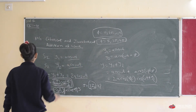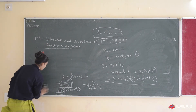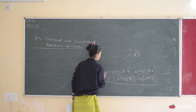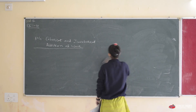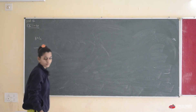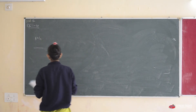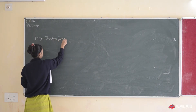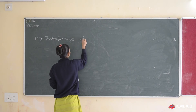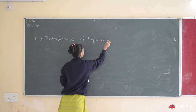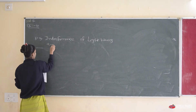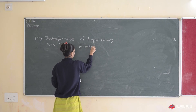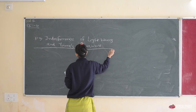Now we will see our second topic, 10.5, which uses similar wave theory but we will find the difference between bright and dark fringes. Topic 10.5 is titled 'Interference of Light Waves and Young's Experiment.' In this, we will find the interference of light waves based on Young's experiment.